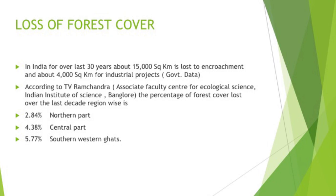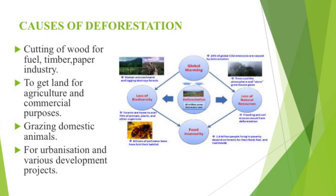Loss of forest cover: in India, over the last 30 years, about 15,000 square kilometers has been lost to encroachment and about 4,000 square kilometers has been used for industrial projects. Causes of deforestation include cutting of wood for fuel, timber and the paper industry, land for agricultural and commercial purposes, grazing of domestic animals, urbanization, and various development projects.